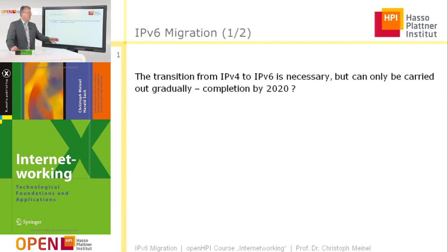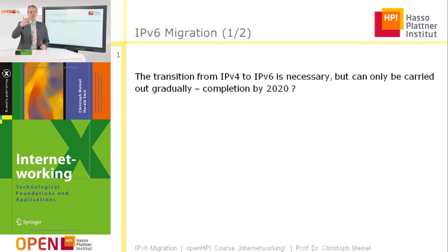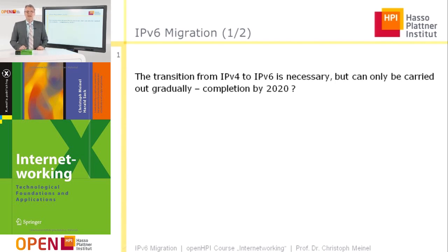The transition from IPv4 to IPv6 is necessary, but there is no Internet government which can say that on January 1st next year we make this transition. Each administrator is responsible for its own network. So in some networks there will be only IPv4, while in others with more advanced administrators they have already migrated to IPv6.